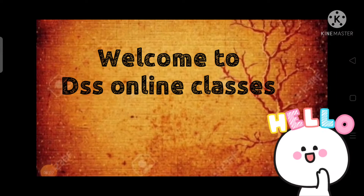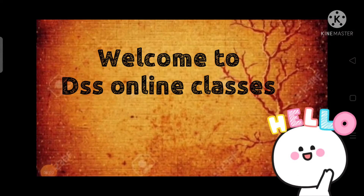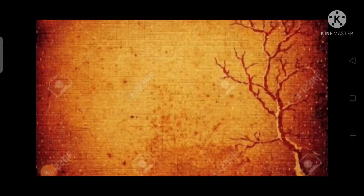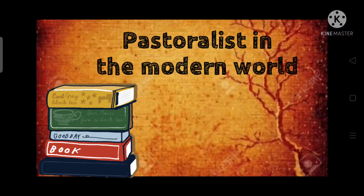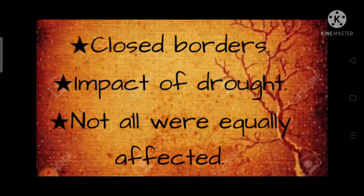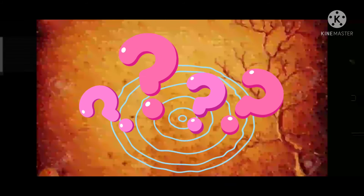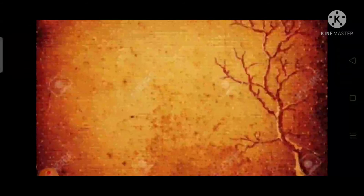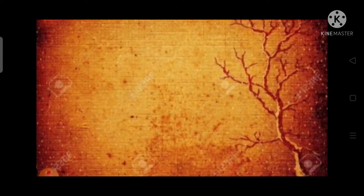Hello everyone, welcome to DSS Online Classes. We will start with NCERT Class 9th History, Chapter: Pastoralism in the Modern World. This is the last video of this chapter. In this video we will discuss the topics: borders are closed, impact of drought, not all were equally affected, and finally conclusions.